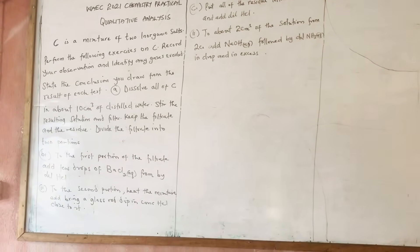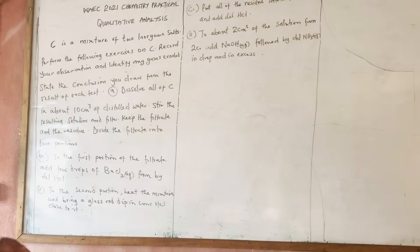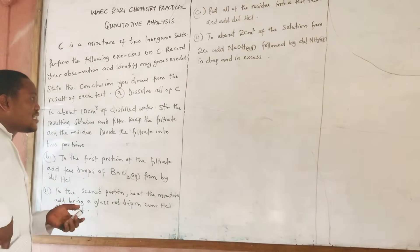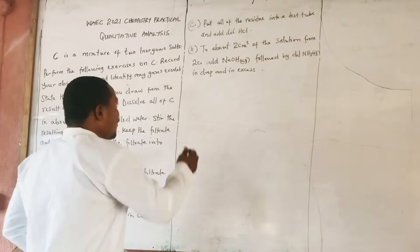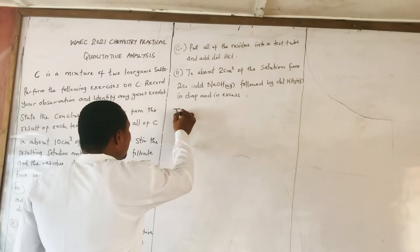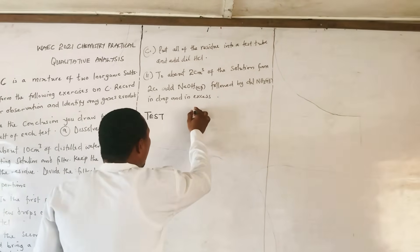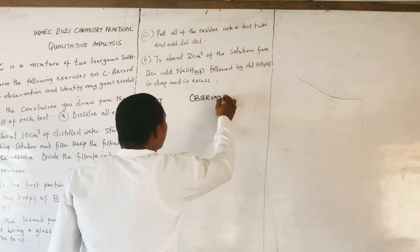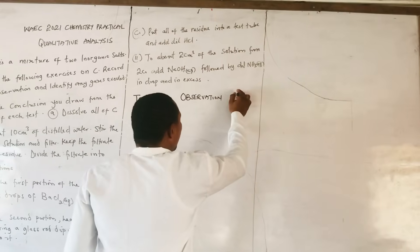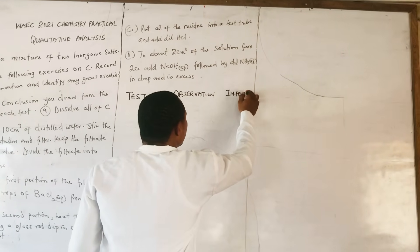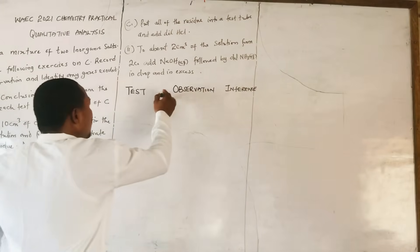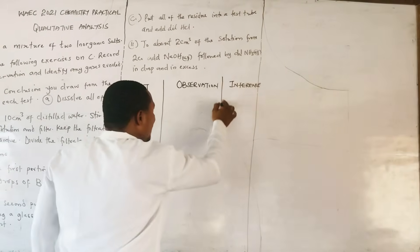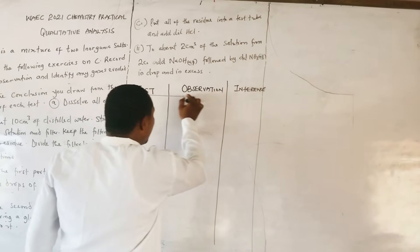For question A, they said: dissolve a sample of C in about 10 cm³. For our qualitative analysis, before you start doing anything, it is very important that we set up our table. We are going to have our test, our observation, and our inference.